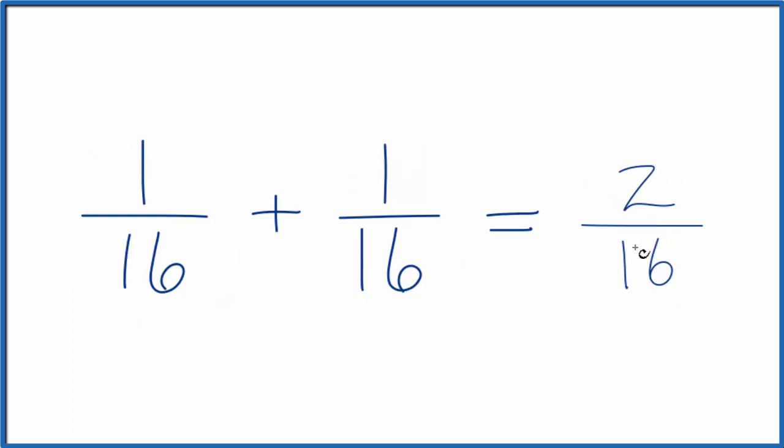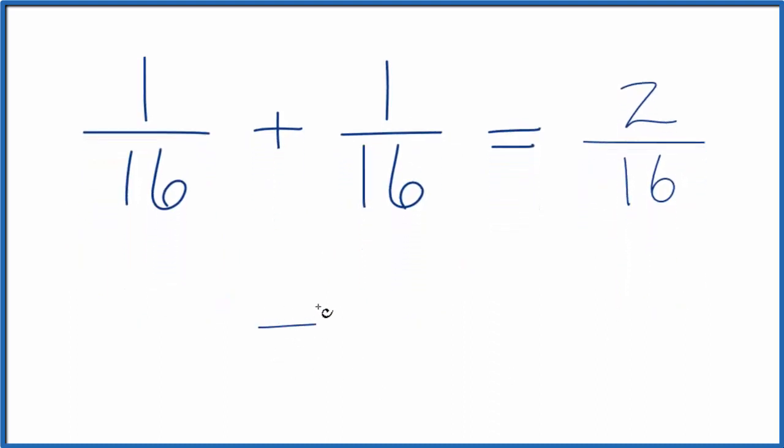We can simplify 2/16 down further because we can divide 2 into 2, that goes in 1 time. 2 into 16 goes in 8 times, so 1/16 plus 1/16 also equals 1/8. This is the simplest form.